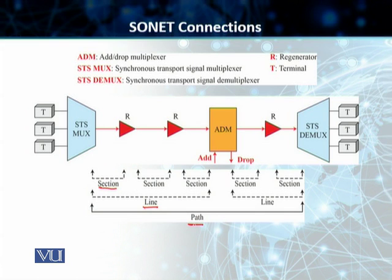Lastly, we have got a path. A path is the end-to-end portion of your SONET network. In this particular case, our end multiplexing device is an STS-MUX, and on the other end we have an STS-DMUX. The end-to-end optical link between these two devices is called a path.